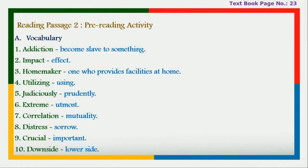Next, reading passage 2, pre-reading activity, textbook page number 23: write the meanings for the given vocabularies. 'Addiction' — become slave to something. 'Impact' — effect. 'Homemaker' — one who provides facilities at home. 'Utilizing' — using. 'Judiciously' — prudently. 'Extreme' — utmost. 'Correlation' — mutuality. 'Distress' — sorrow. 'Crucial' — important. 'Downside' — lower side.